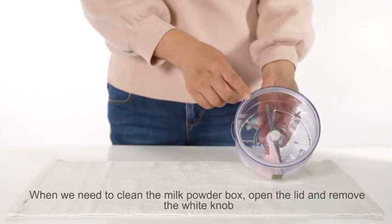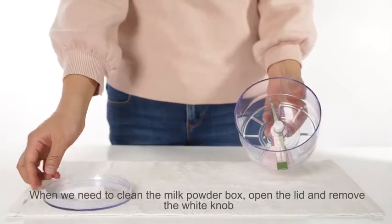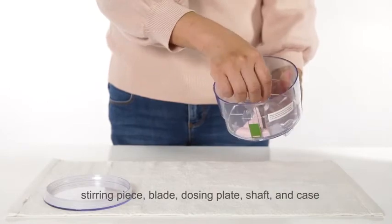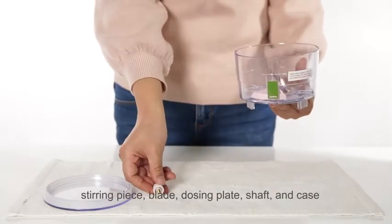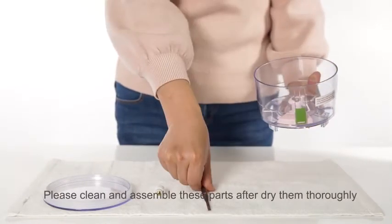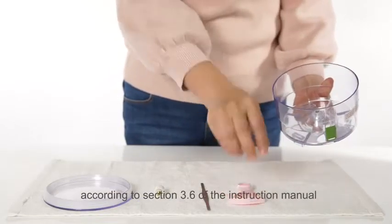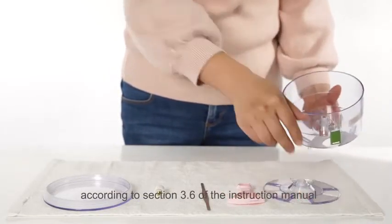When we need to clean the milk powder box, open the lid and remove the white knob, stirring piece, blade, dosing plate, shaft, and case. Please clean and assemble these parts after drying them thoroughly according to section 3.6 of the instruction manual.